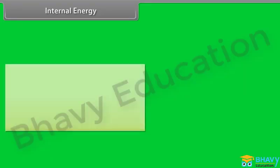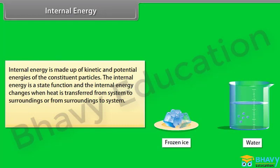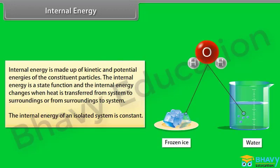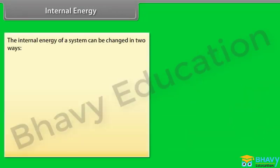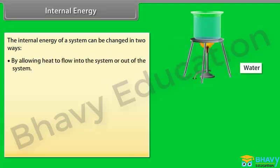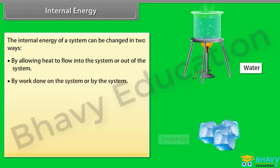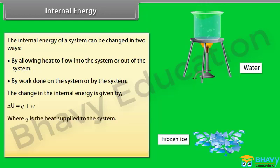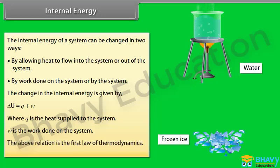Internal energy is made up of kinetic and potential energies of the constituent particles. The internal energy is a state function and changes when heat is transferred from system to surroundings or from surroundings to system. The internal energy of an isolated system is constant. The internal energy of a system can be changed in two ways: by allowing heat to flow into or out of the system, or by work done on the system or by the system. The change in internal energy is given by delta U equals Q plus W, where Q is the heat supplied to the system and W is the work done on the system. This relation is the first law of thermodynamics.